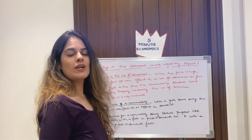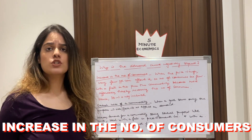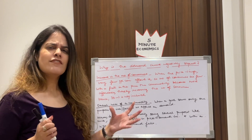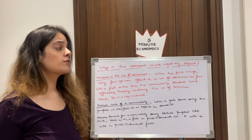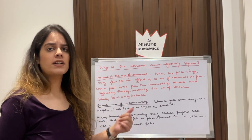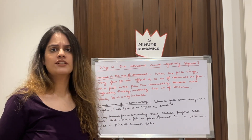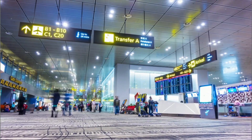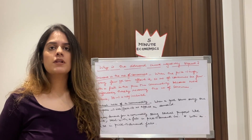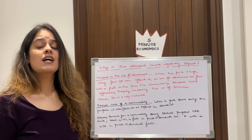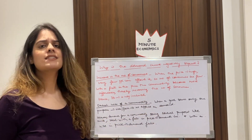Together, the income effect and substitution effect are called the price effect. Coming to another reason for the negatively sloping demand curve: an increase in the number of consumers. When the price of a commodity is very high, very few people can afford it, but when the price falls it becomes affordable and the number of consumers increases. For example, flight tickets were once a luxury, but as airfares reduced, more people now prefer flying.